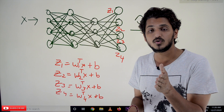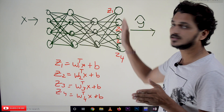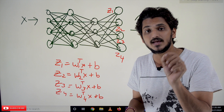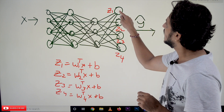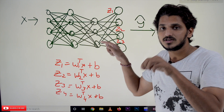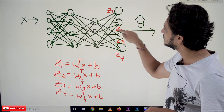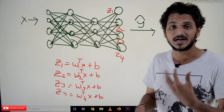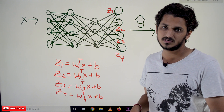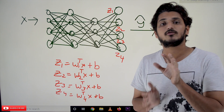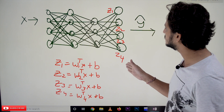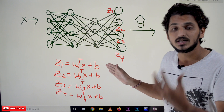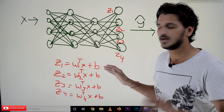Now we have to apply the activation function. In our previous classes, we applied activation functions individually on each neuron — activation on Z1, Z2, Z3, Z4 separately. But the Softmax function is different: we apply Softmax on the entire output layer at once.